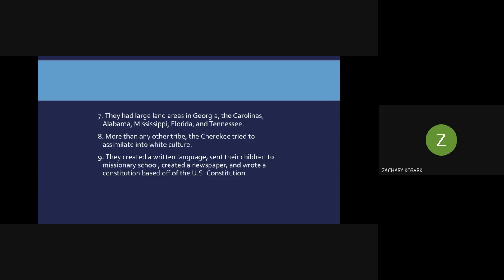More than any other tribe among these five, the Cherokee tried their best to assimilate into white culture to keep their territory and way of life. They created a written language, sent their children to missionary schools to be taught Christian teachings, created a newspaper, and wrote a constitution for their Cherokee Nation based on the U.S. Constitution. They were taking steps to try to please the white settler and the United States of America to keep their territory and their way of life.